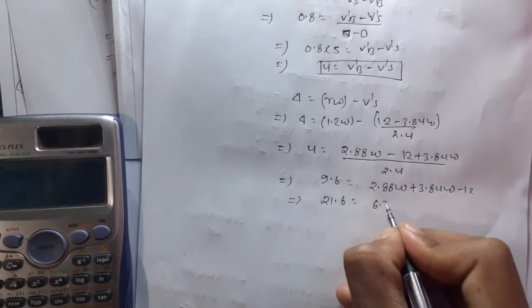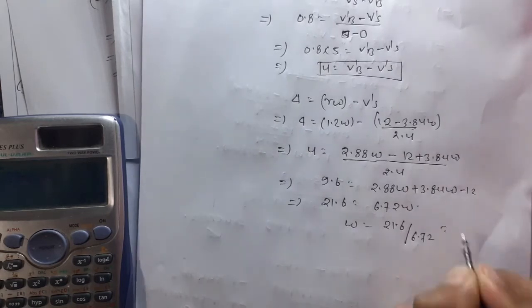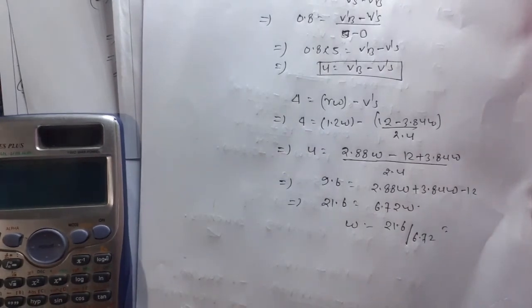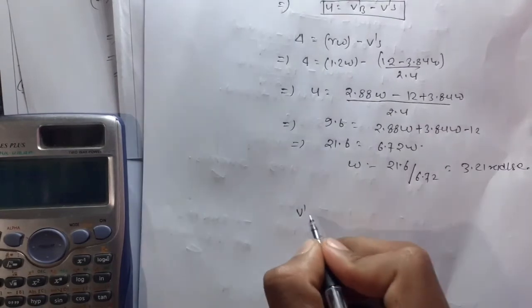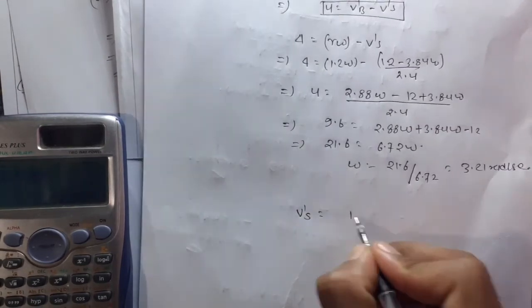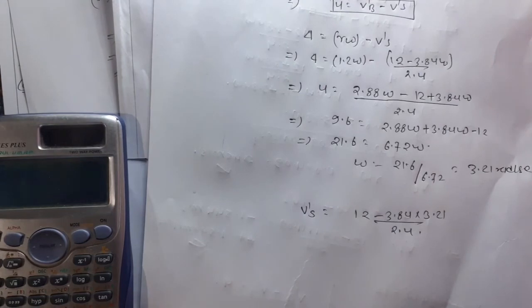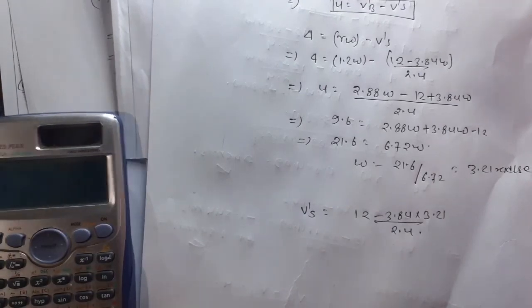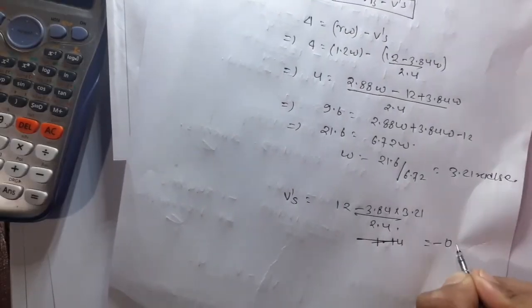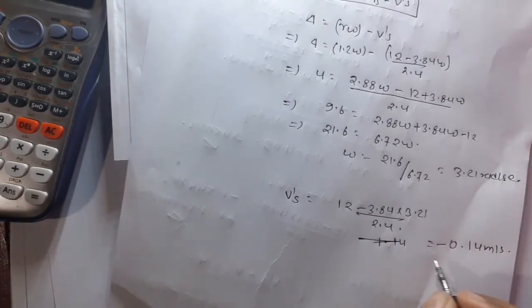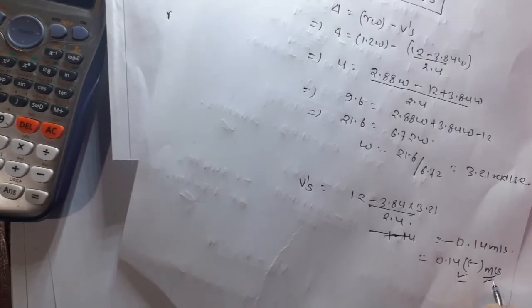Now v'_s is given by (12 - 3.84 × 3.21)/2.4, which equals -0.14 meter per second. So the sphere moves at 0.14 m/s in the opposite direction. This is the solution for this problem.